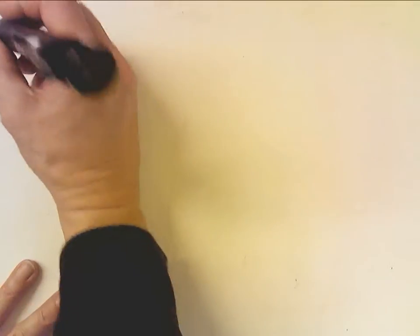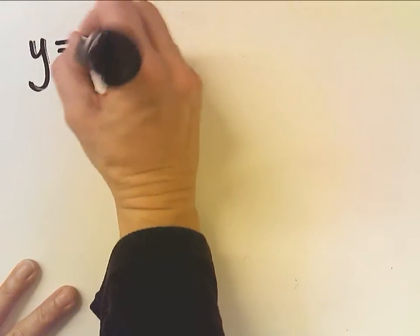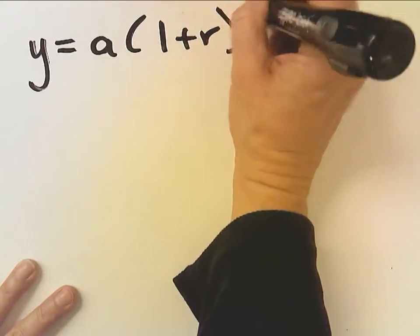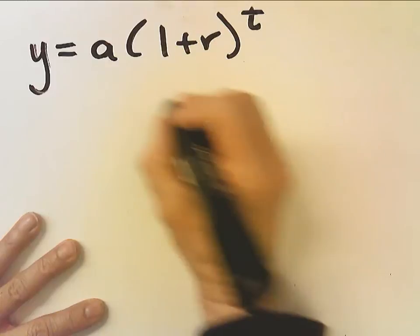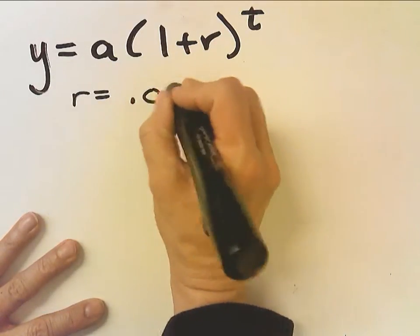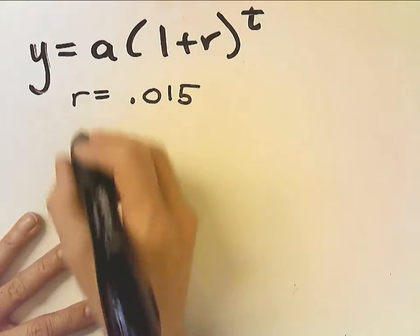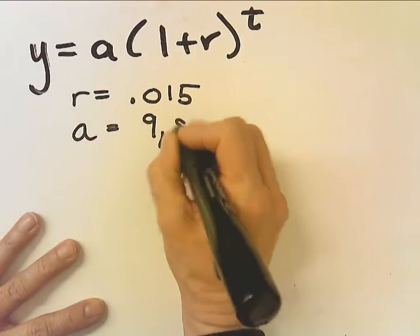So, this is going to be a growth function. So, the first thing I'm going to do is actually write the growth formula. So, for it to be growth, I'm going to say y equals a times 1 plus r to the t. Now, it tells me it's growing at 1.5% per year. So, the rate r, I would write as 0.15. And a, the initial amount, is 9,800,000.